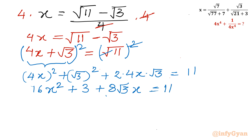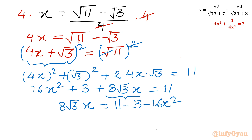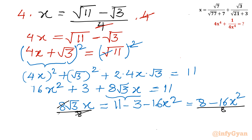I will keep 8 square root 3 times x on the left and move other terms to the right hand side. So 8 square root 3 times x equals 11 minus 3 minus 16x squared, which equals 8 minus 16x squared. This equation is divisible by 8, so dividing both sides by 8 gives square root 3 times x equal to 1 minus 2x squared.